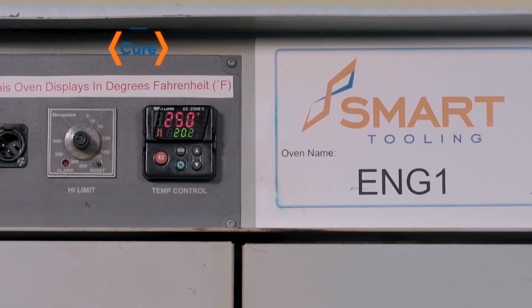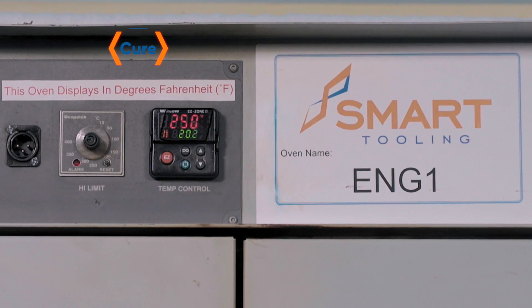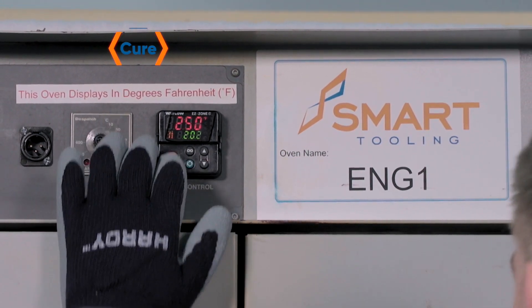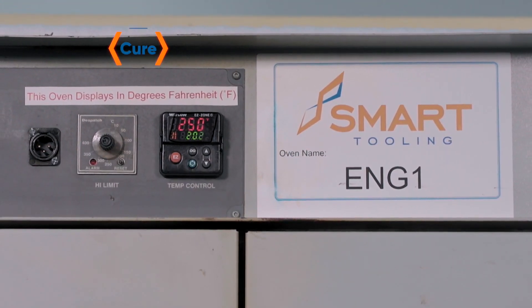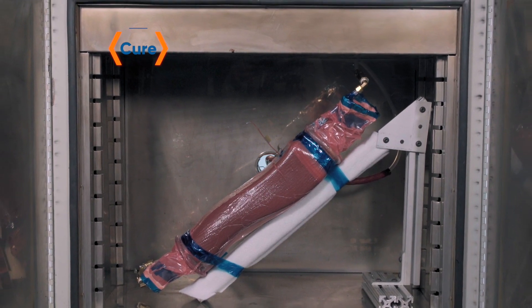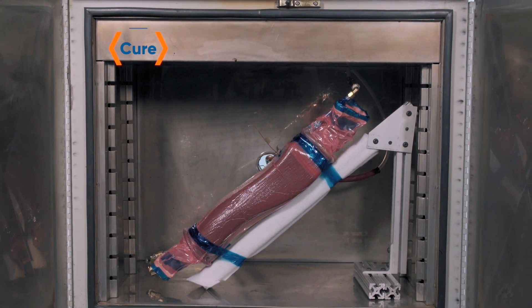During the initial composite cure at 250 degrees Fahrenheit, the Smart Tool remains rigid and sets the inner mold line geometry of the composite part. Once the composite part has completed its initial cure cycle,